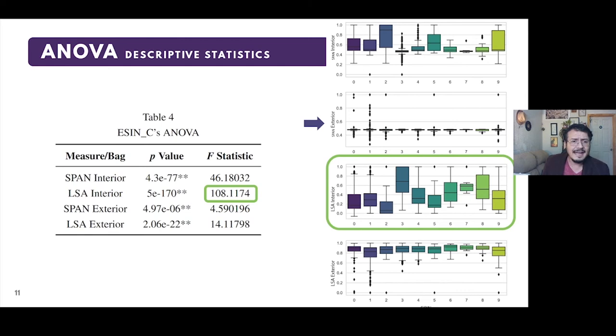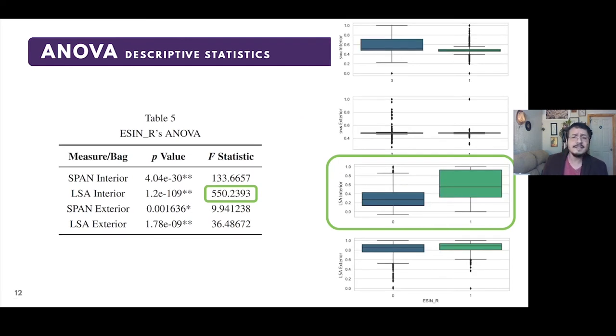For CINSE R, ANOVA showed the following results. For this analysis, it stands out even more that exterior windows does not show a comparable statistic with interior windows of the phrase. LSA with interior bag also shoots up to five times more than the closest measure, leaving far behind the measurements that use the exterior bag.